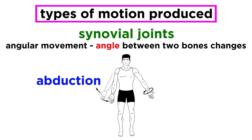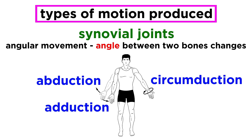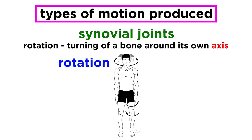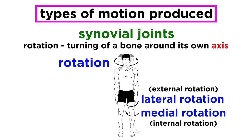Abduction is motion of a limb away from the midline of the body, such as moving your arms up and away from your sides. Adduction is the opposite — moving a limb toward the midline, like bringing your arms down to your sides. Circumduction involves making circles with a limb, such as arm circles. Rotation involves the turning of a bone around its own axis, which happens at hips and shoulders, and can be categorized as either internal or external rotation.